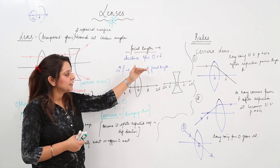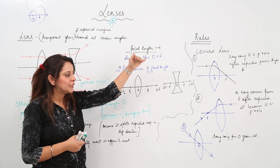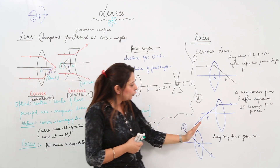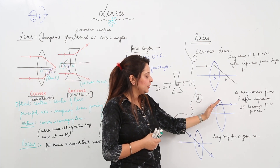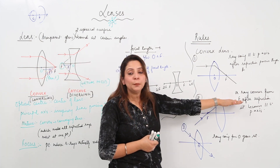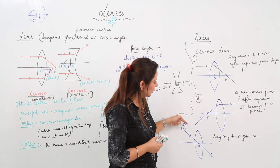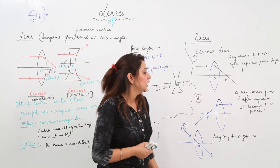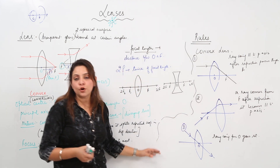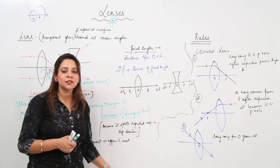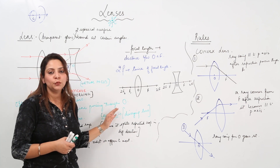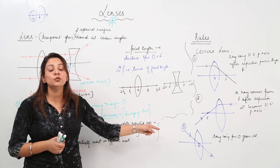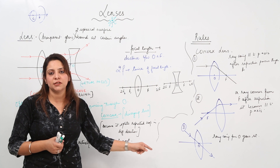To summarize the three rules: a ray parallel to the principal axis passes through focus after refraction; a ray coming from focus becomes parallel to the principal axis after refraction; a ray passing through O goes straight. Now it's time to draw figures, so practice these rules carefully as they are very important.